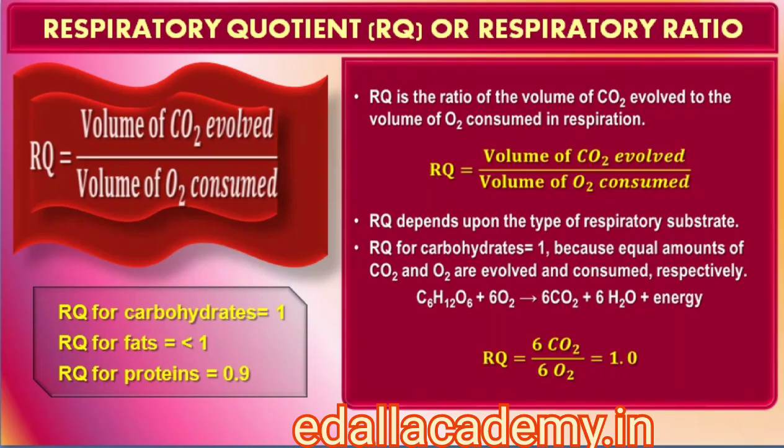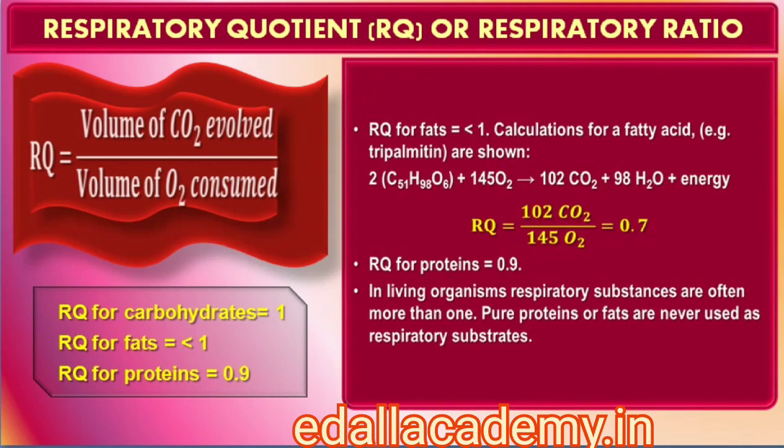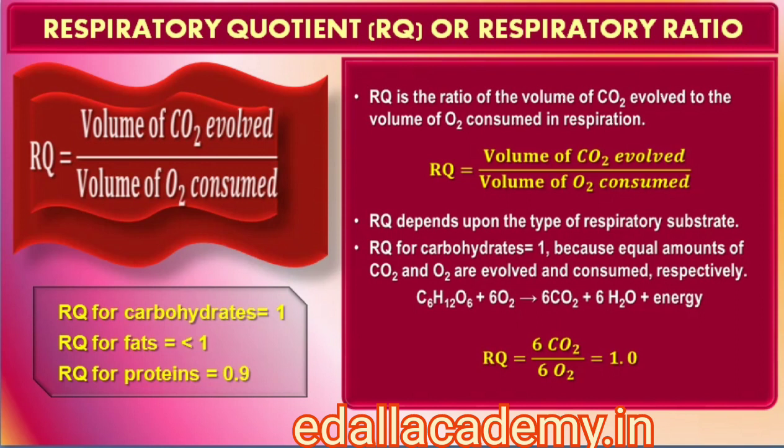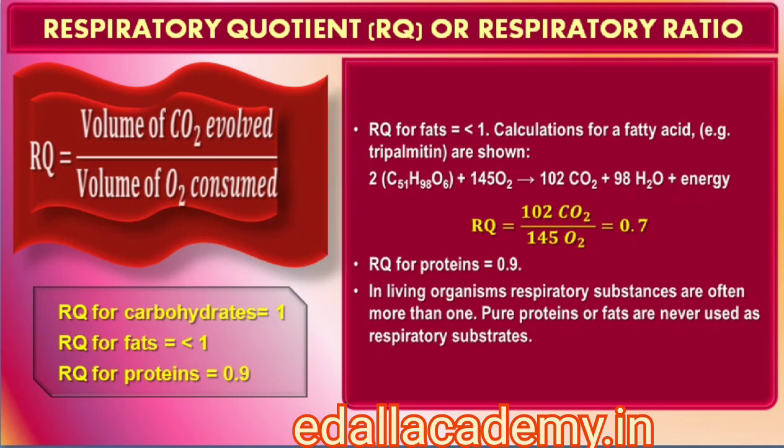14.7 Respiratory Quotient. During aerobic respiration, O2 is consumed and CO2 is released. The ratio of the volume of CO2 evolved to the volume of O2 consumed in respiration is called the respiratory quotient (RQ), or respiratory ratio. The respiratory quotient depends upon the type of respiratory substrate used. When carbohydrates are used as substrate and are completely oxidized, the RQ will be 1, because equal amounts of CO2 and O2 are evolved and consumed respectively. When fats are used in respiration, the RQ is less than 1. When proteins are respiratory substrates the ratio would be about 0.9. In living organisms, pure proteins or fats are never used as respiratory substrates in isolation.